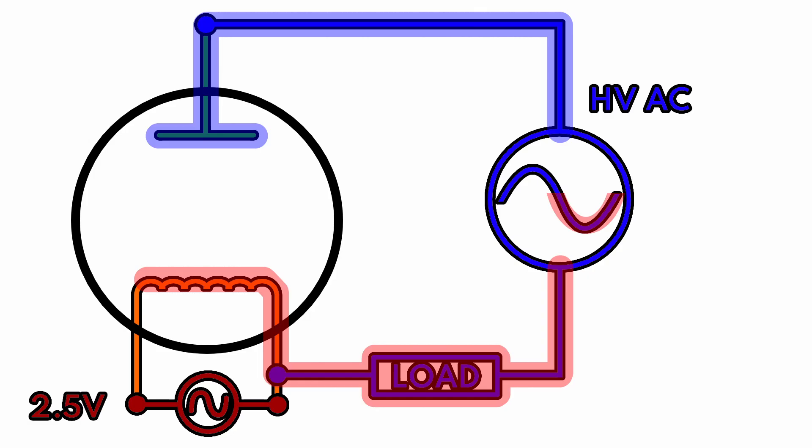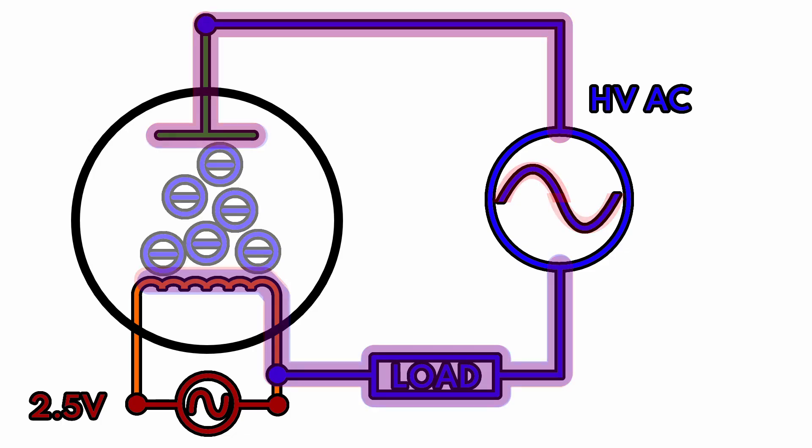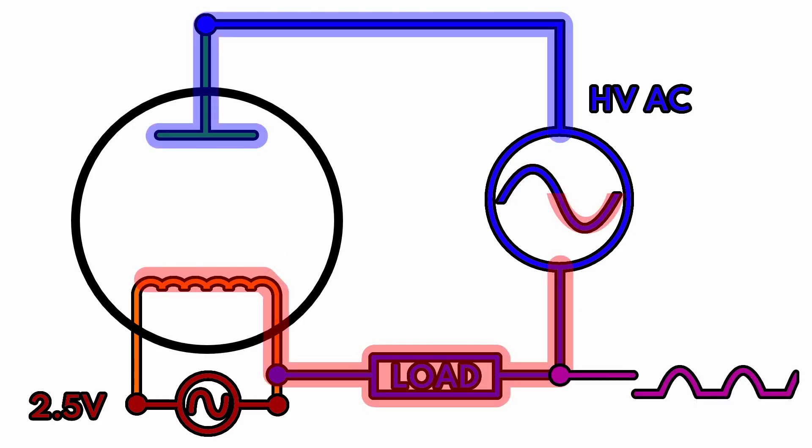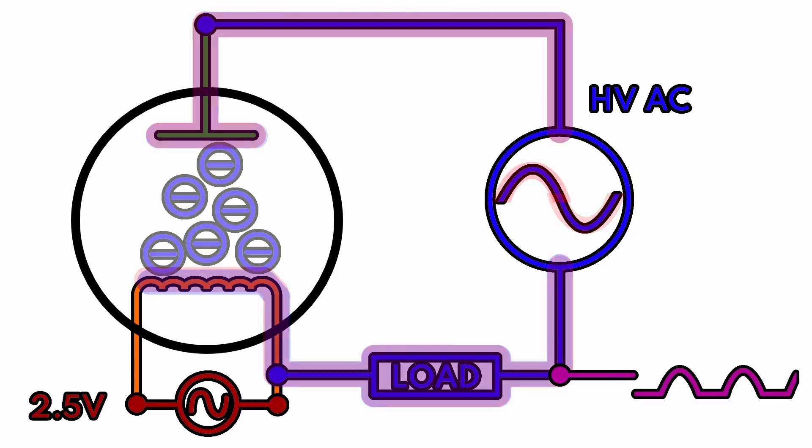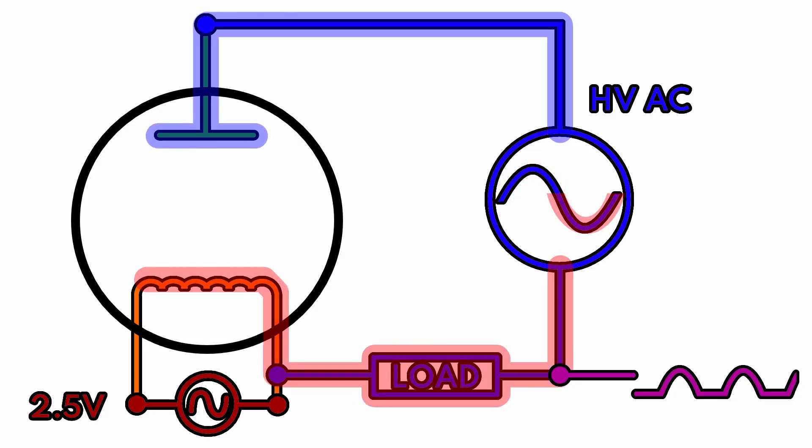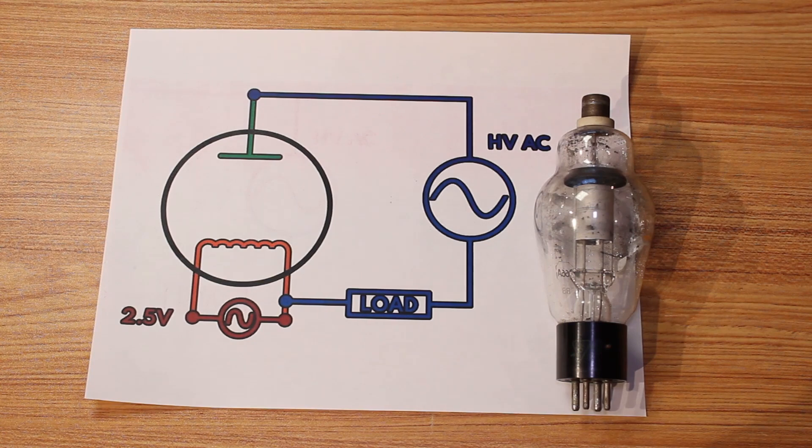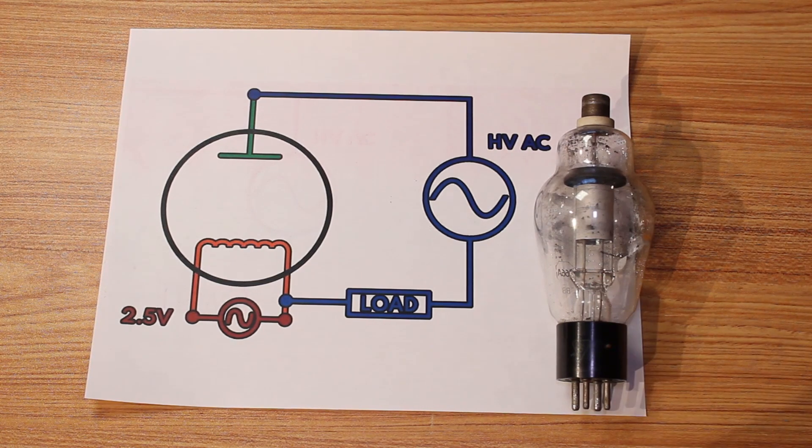So there is no way for the electrons to flow, and so this is taking that negative component of our sine wave and just slicing it off. So we're rectifying our AC into very bumpy DC. This is very common of pretty much any vacuum tube rectifier.